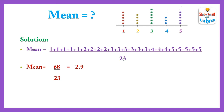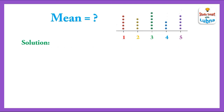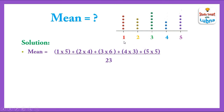This is one way to find the mean using the Dot Plot. There is one more way. We will multiply each number by its number of dots: 1 multiplied by 5, plus 2 multiplied by 4, plus 3 multiplied by 6, plus 4 multiplied by 3, plus 5 multiplied by 5. For the denominator, we count the total number of dots.